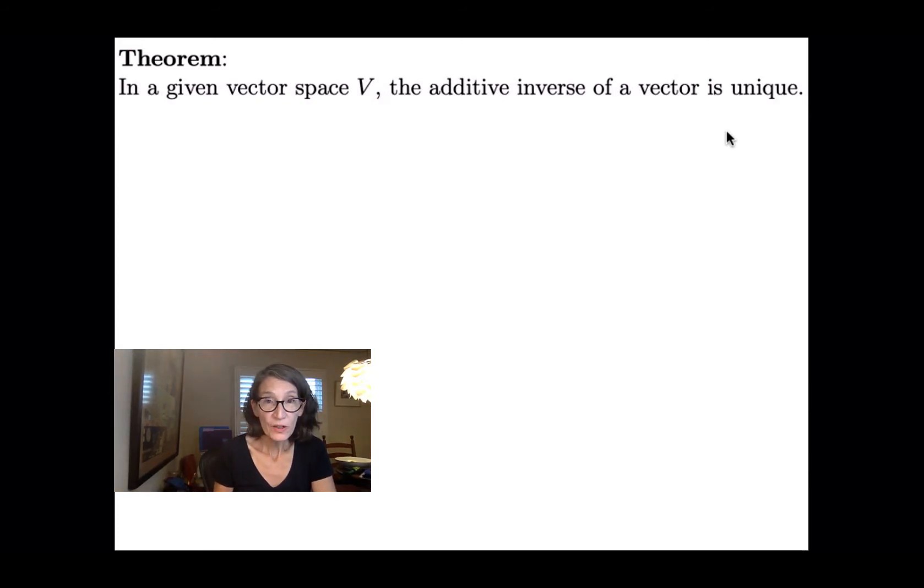So let's remind ourselves what an additive inverse is. If v is a vector in a vector space, its additive inverse is w, if v plus w is the additive identity, and w plus v is the additive identity.